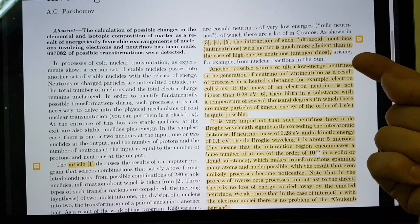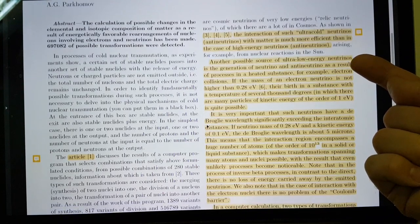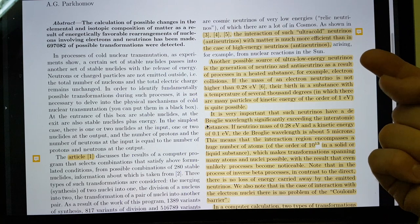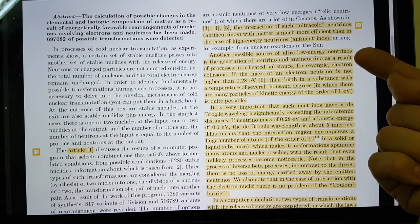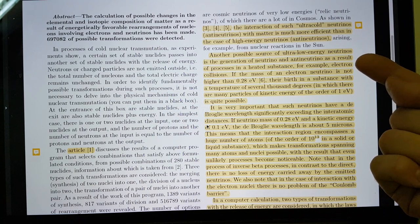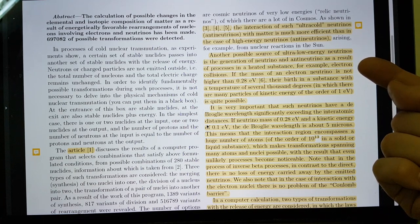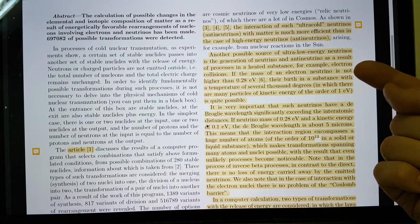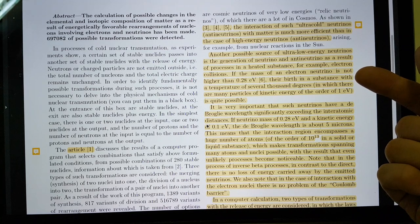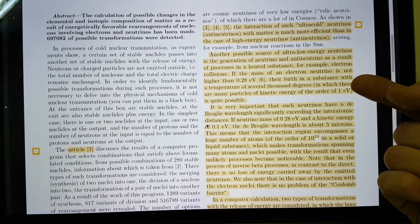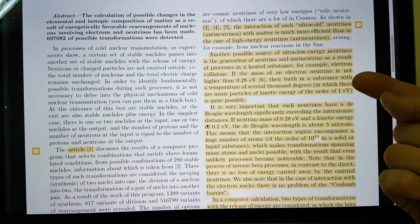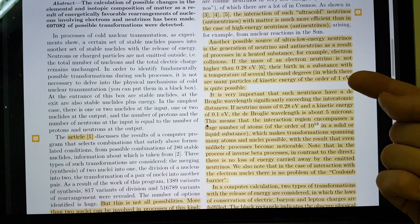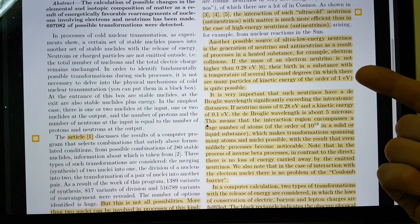He's saying, another possible source of ultra-low-energy neutrinos is the generation of neutrino and antineutrino as a result of processes in a heated substance. For example, electron collisions. If the mass of an electron neutrino is not higher than 0.2 eV, and he's got a reference for that, their birth in a substance with a temperature of several thousand degrees, in which there are many particles of kinetic energy of the order of 1 eV, is quite possible.